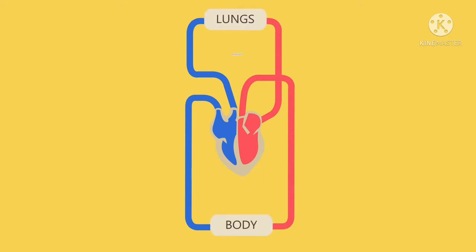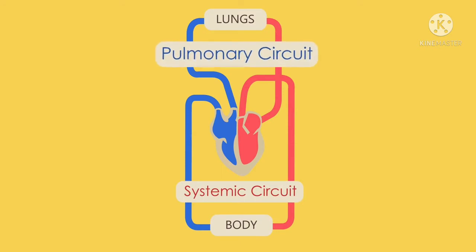This system is actually a double circulatory system, made of two circuits, the pulmonary circuit and the systemic circuit. In the pulmonary circuit, deoxygenated blood is pumped from your heart to your lungs to become oxygenated.